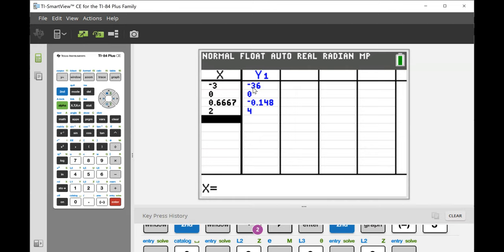And of these values: -36, 0, -0.148, and 4. Negative 36 is the minimum, and 4 is the maximum. So after all that work finding the critical values, neither of them ended up being what we were looking for in this problem.